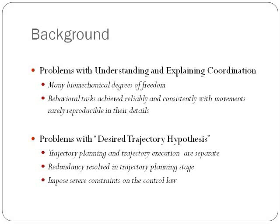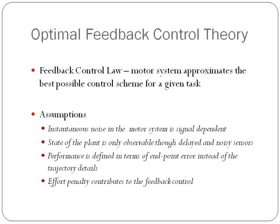Several limitations in this theory initiated the development of the Optimal Feedback Control Theory. This theory suggests that motor systems develop a control schema for a given task rather than a desired trajectory. This model makes several valid and useful assumptions, such as: instantaneous noise in the motor system is signal dependent; the state of the plant, which is either the arm or the hand, is only observed through delayed and noisy sensors; performance is defined in terms of endpoint error instead of trajectory details; and the effort penalty contributes to the feedback control.